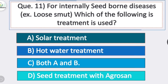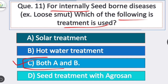Question 11: for internally seedborne diseases, such as loose smut, which treatment is used? Option C is correct — both A and B. For internally seedborne diseases, hot water treatment and solar treatment are both effective.